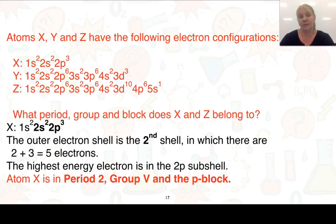Now we need to look at some examples. Here we have atoms X, Y, and Z, and we've given you their electron configurations. If we look at what period, group, and block does an element belong to, let's have a look at X. So we have 1s² 2s² 2p³. The outer electron shell is our second shell. We can look at the number of electrons in that shell: 2 here and 3, which gives us 5 electrons. So we end up with the highest energy electron in the 2p shell, and it's in period 2, group 5, in the P-block.